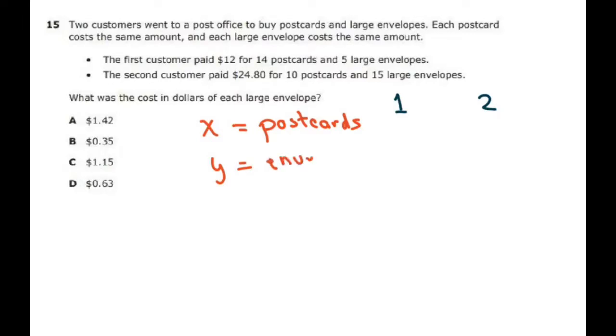So for person 1, the equation is 14 postcards, postcards is x, and means plus 5 large envelopes. The envelopes is y and that equals the total amount, $12.00.